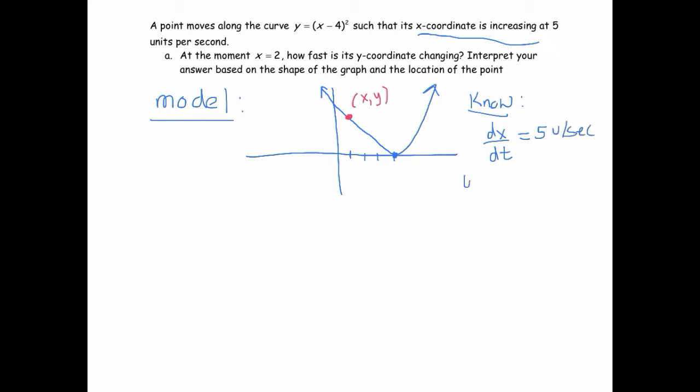And what we want is we want to know dy/dt when x equals 2. Notice that when x equals 2, the point will be right here, which means its y-coordinate is decreasing, so we should expect, we should anticipate that this rate is going to be negative.